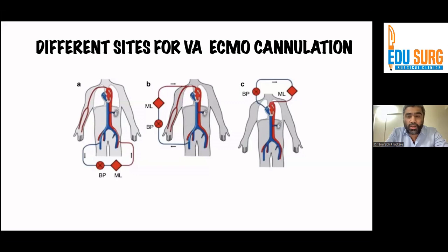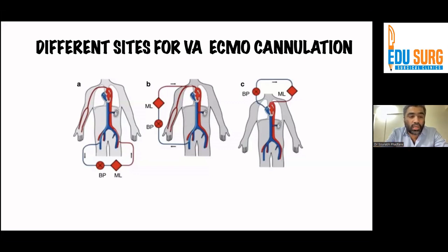For central ECMOs, basically patients who are in the cardiac OR and cannot get off the heart-lung machine may have to be put on a central ECMO. In this configuration, the right atrium is directly cannulated and the blood is drawn from it over the blood pump and membrane lung, and is then returned back to the proximal part of the ascending aorta.